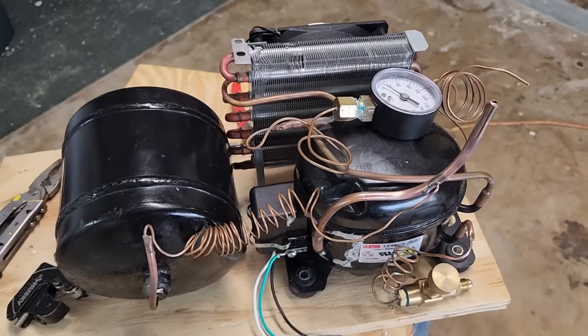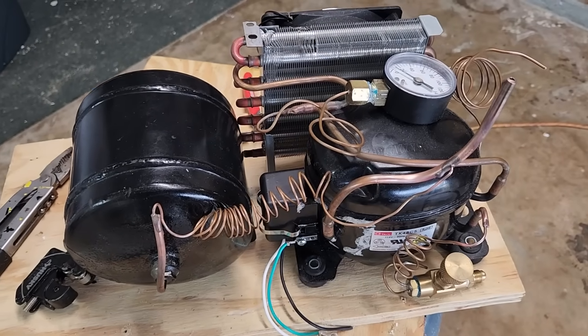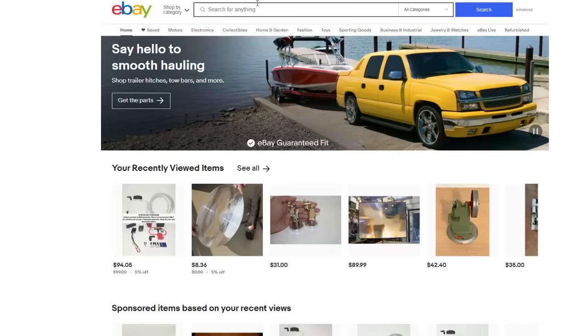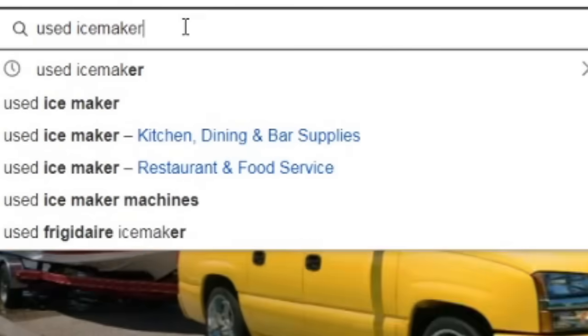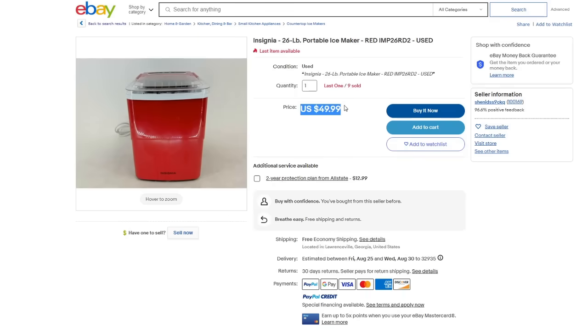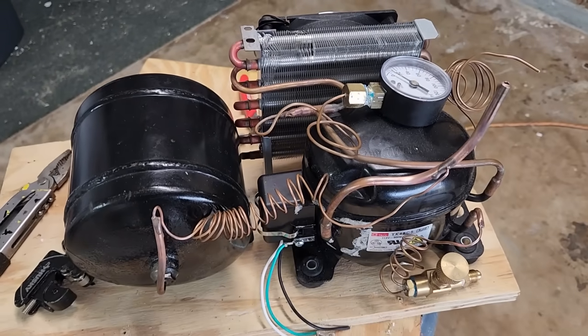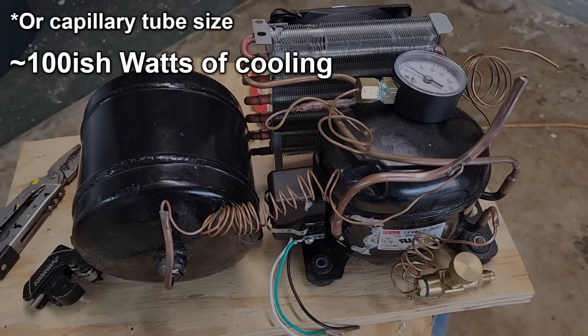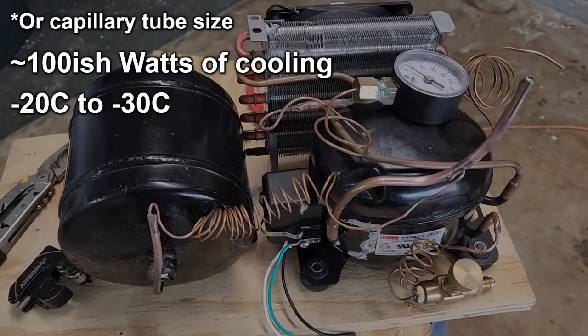For mine, I just grabbed the system I had laying around from a previous video on Cascade refrigeration. This came from a used ice maker I got for $50, and I just added a fill valve and a pressure gauge. With propane as a refrigerant and the correct expansion valve setting, I should be able to provide around 100 watts of cooling at somewhere around minus 20 to minus 30 C.